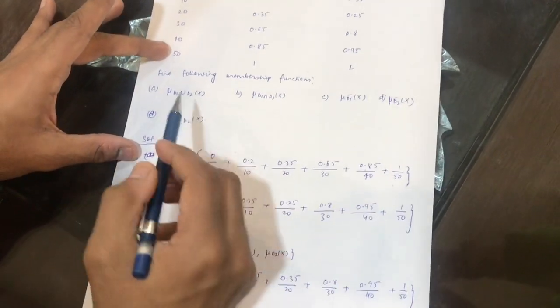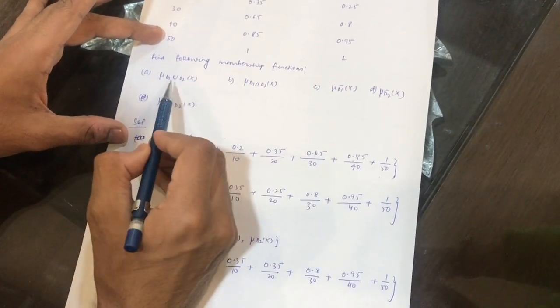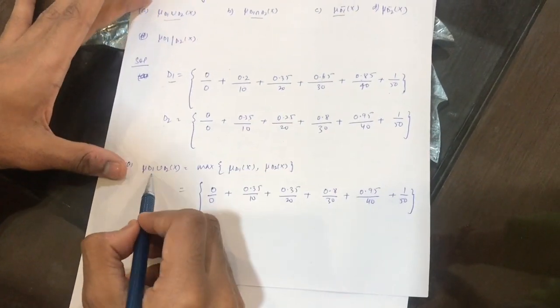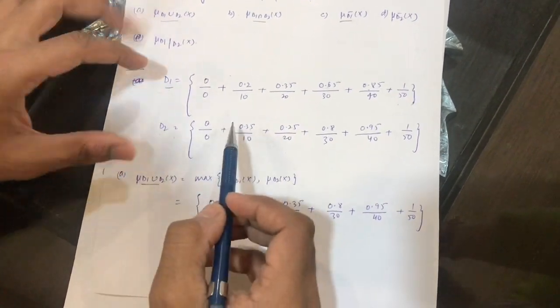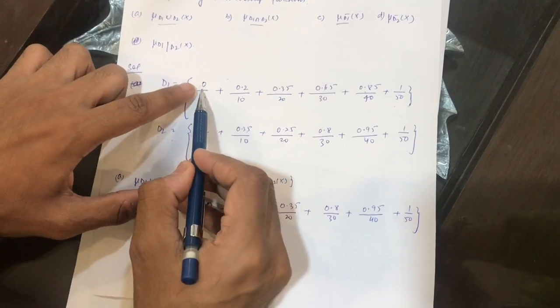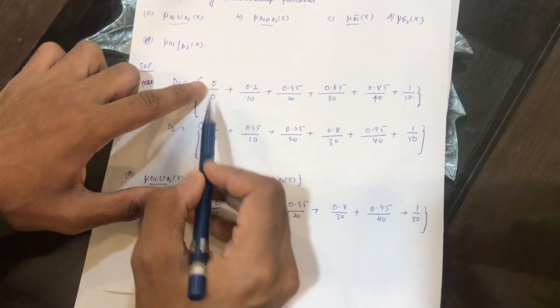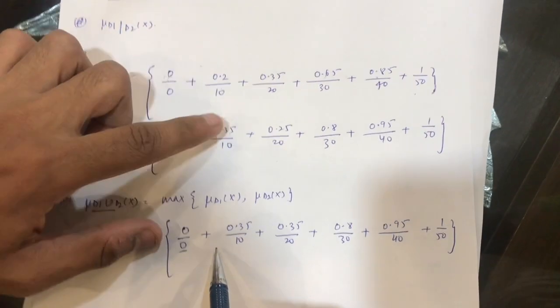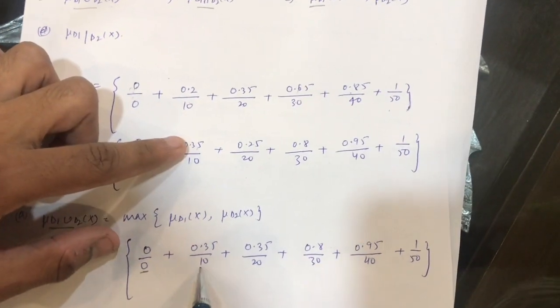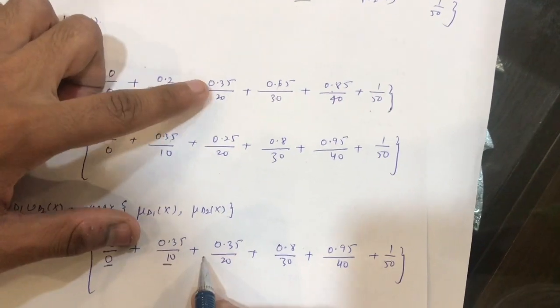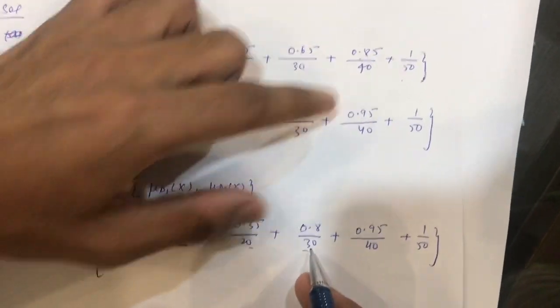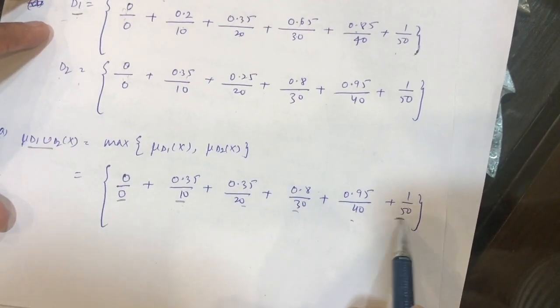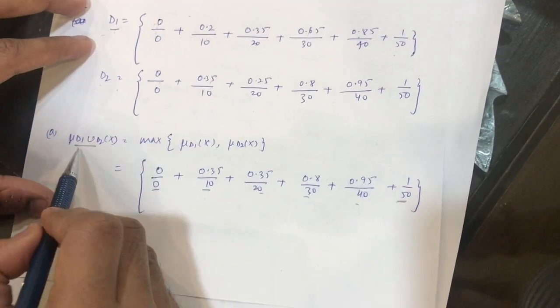Now let's perform the operations they asked for: union, intersection, and complement. For union D1 ∪ D2, we take the corresponding elements and compare which is maximum. 0 and 0 gives 0, 0.2 and 0.35 gives 0.35, then 0.35, 0.8, 0.95, and 1. So the final answer for union is 0/0 + 0.35/10 + 0.35/20 + 0.8/30 + 0.95/40 + 1/50.